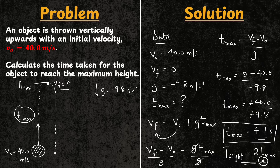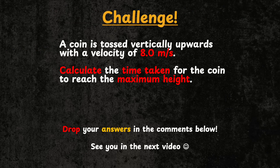Now I have a challenge for you — let's get interactive! A coin is tossed vertically upwards with a velocity of 8.0 meters per second. Calculate the time taken for the coin to reach the maximum height, and drop your answers in the comments. I'll see you in the next video!